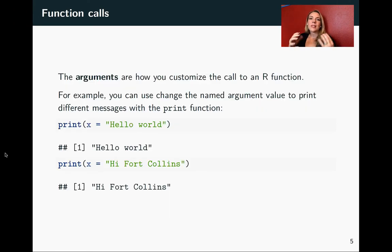These arguments are how you customize calls to an R function. There are a lot of R functions out there, and they'll often have default behavior, but you might want to change that, and that means they can do a lot more for you. These arguments are how you set and make those changes each time you run the function. For example, if we wanted to change and not print out hello world, we could change the value we're giving for the argument to Hi Fort Collins instead. And then when we run it, it will use that for the argument.